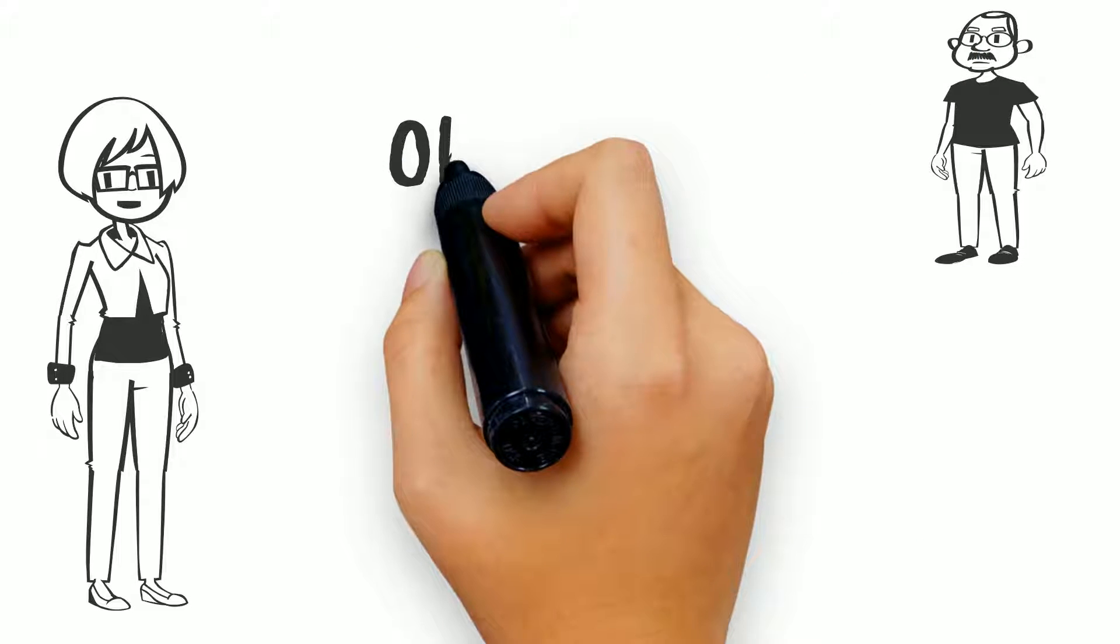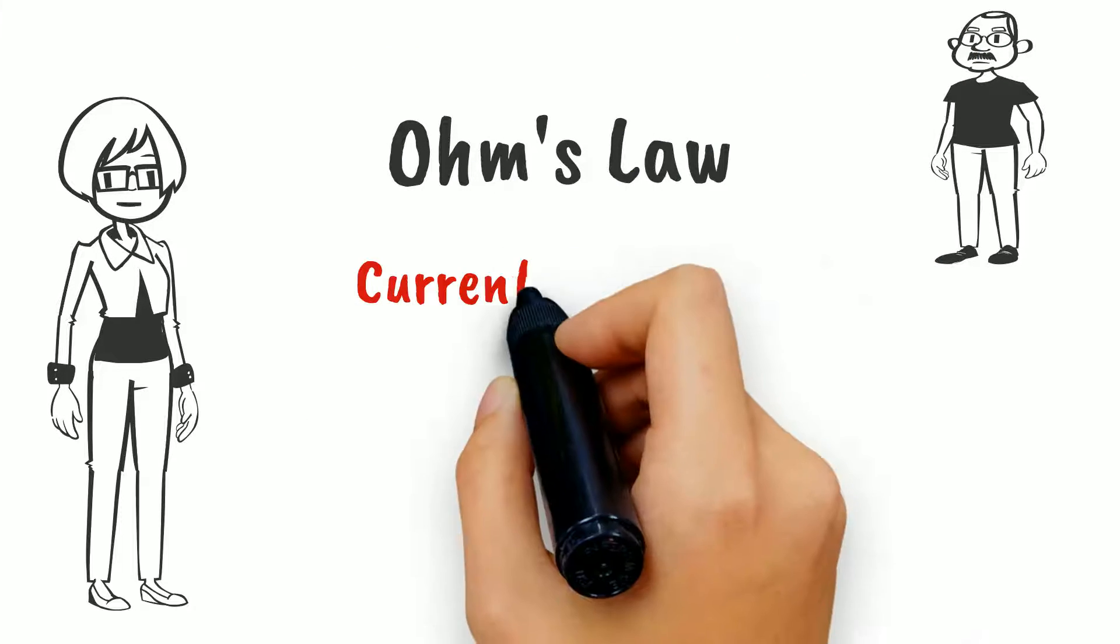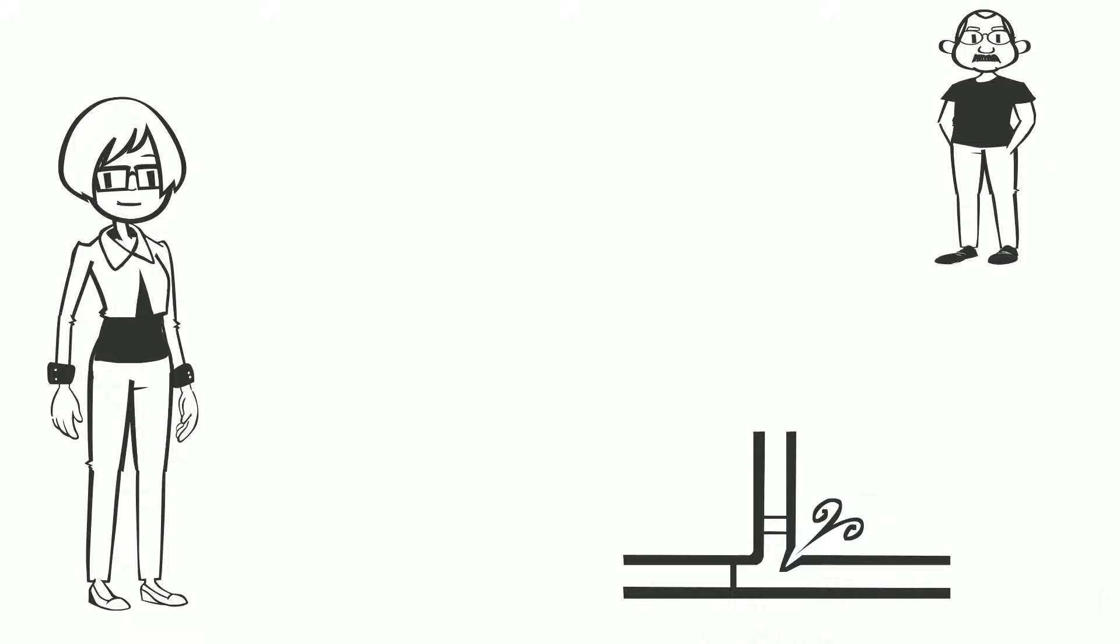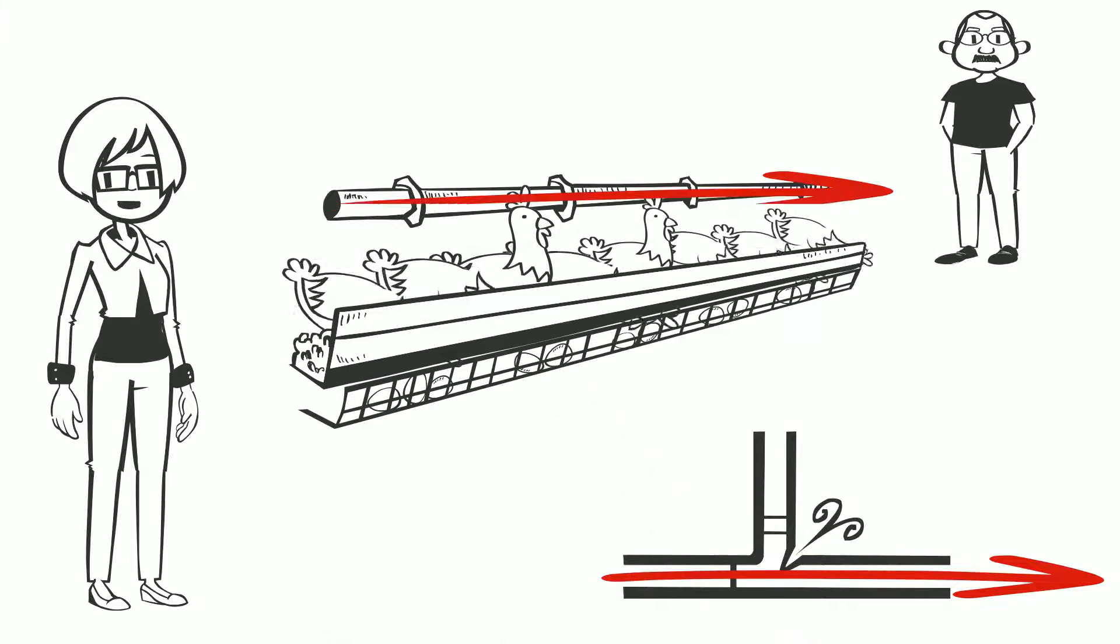There are two important laws that we need to remember. The first is Ohm's law. Current will travel along the path of least resistance. What this means is that current will flow preferentially along conductive material, like metal pipes or wires.